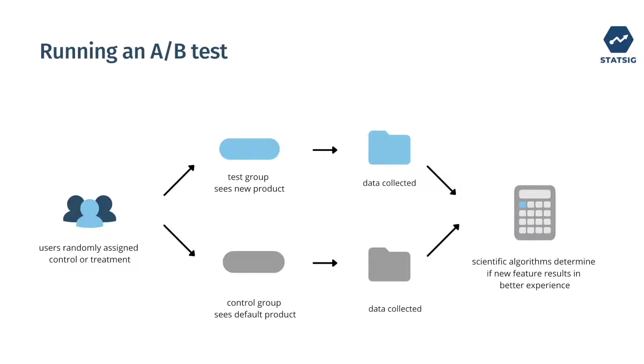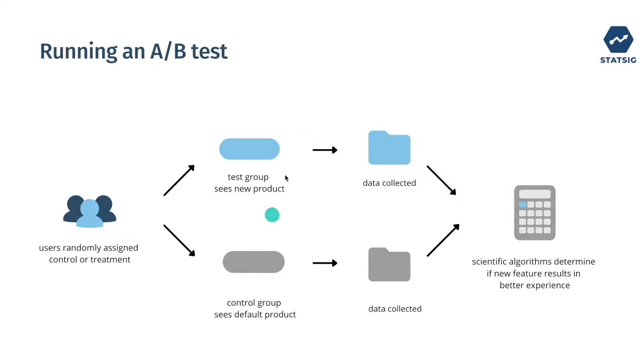Control groups see the default or existing product — for example, a grey button — while the treatment group sees the feature that we're thinking about releasing, for example a blue button.